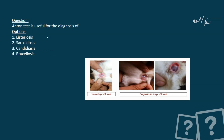The Anton test is useful for diagnosis. As you can see, they are instilling some fluid into the eye of a rabbit, which is later developing conjunctivitis. The Anton test is useful for identification of a bacterium called Listeria monocytogenes.